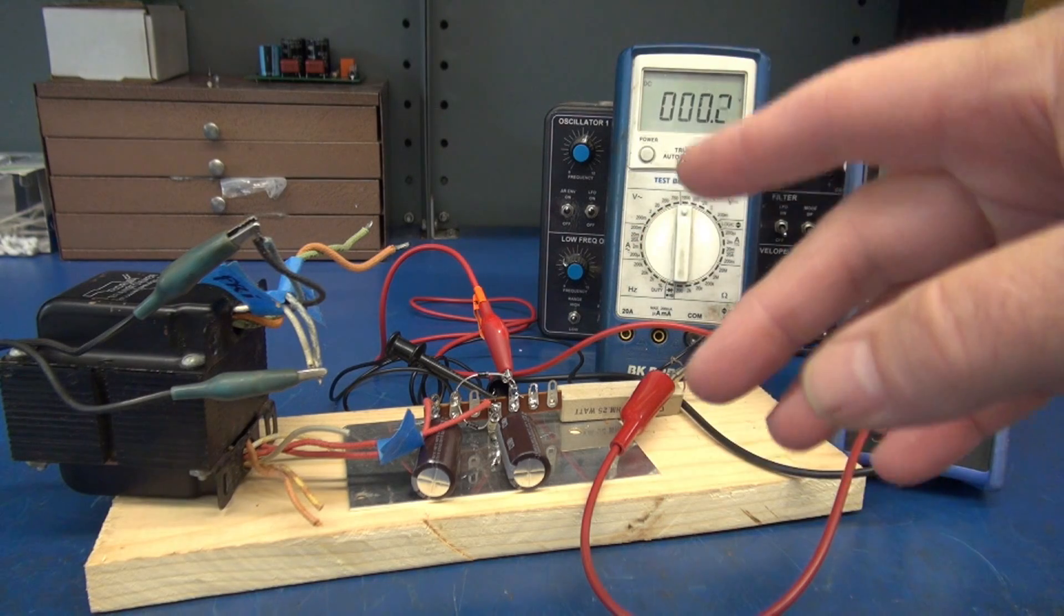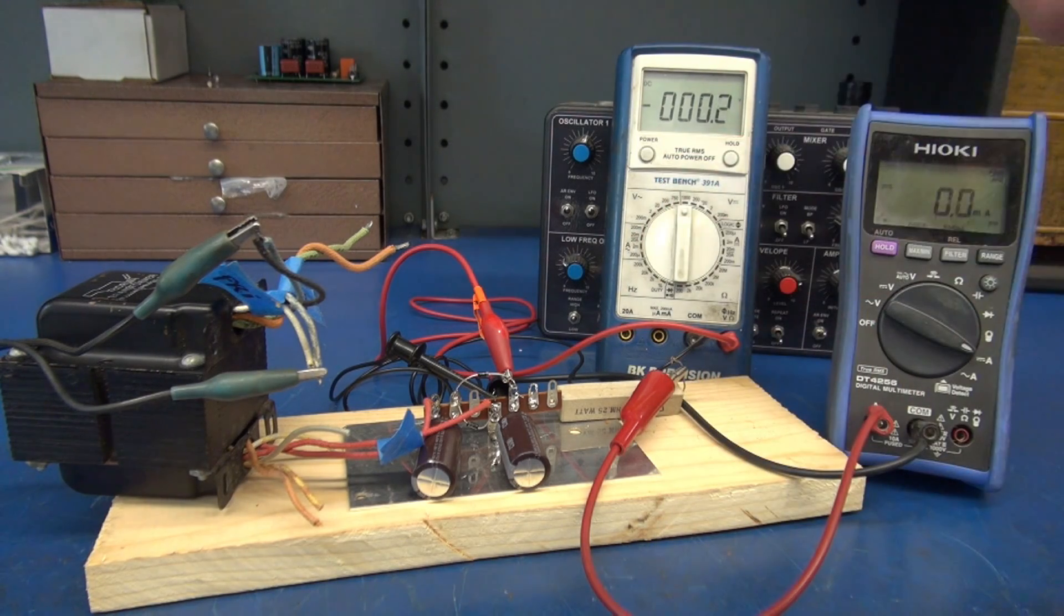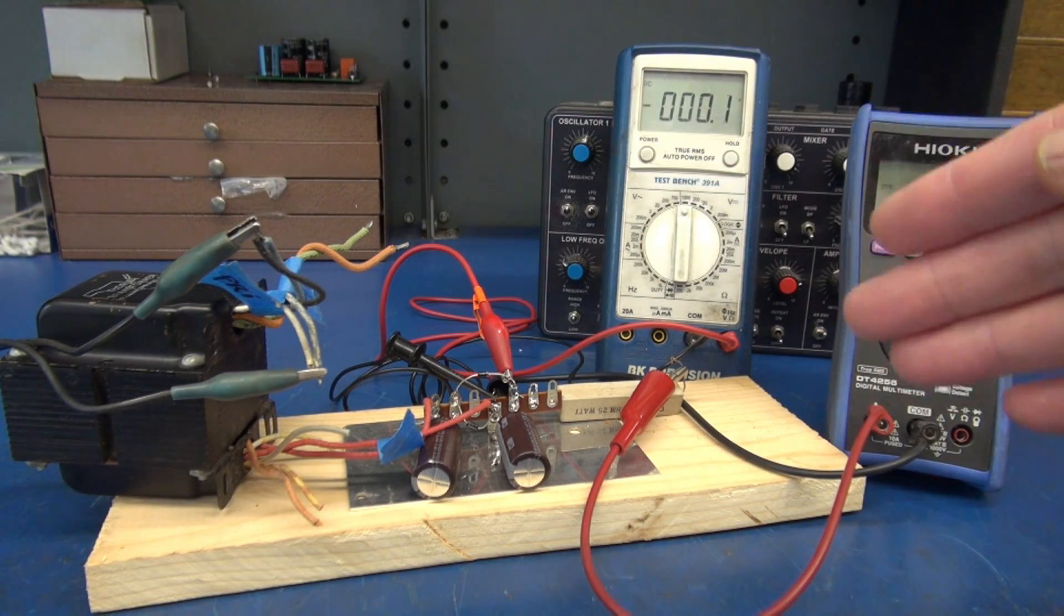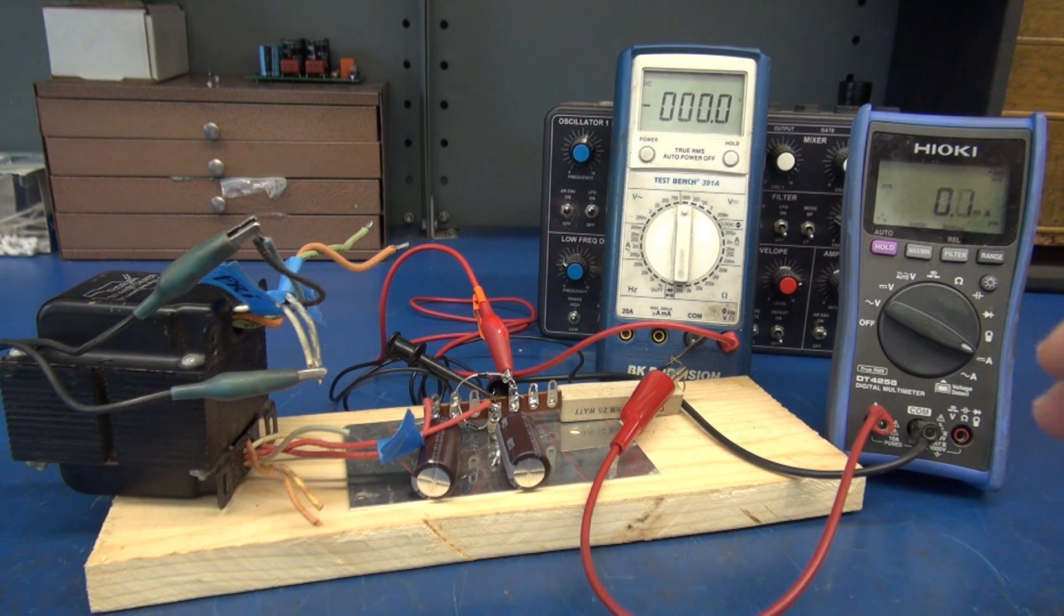The secondary happens to have a 115 volt winding and a 6.3 volt AC winding. So I built a voltage doubler circuit for the 115 which is going to step it up to approximately 290 volts DC.